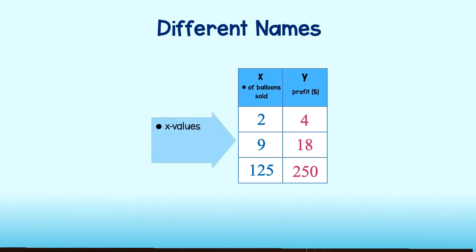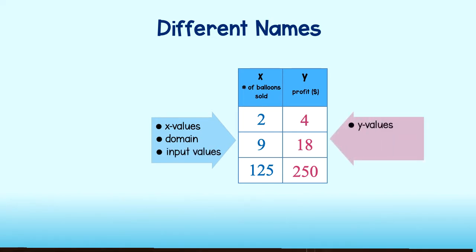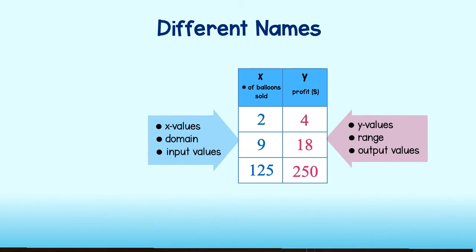Notice these x values, or the values in my domain — they are the values that I inputted into my equation. For that reason, we oftentimes refer to them as input values. The y values, or values in the range, are oftentimes called output values, since this is the number that comes out of the equation. It is important to understand the different names of these various terms moving forward.